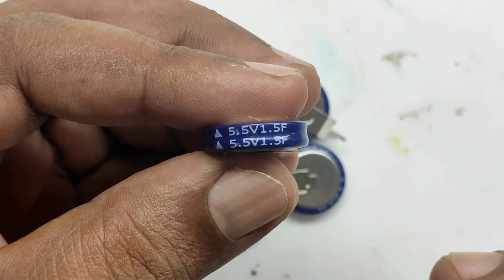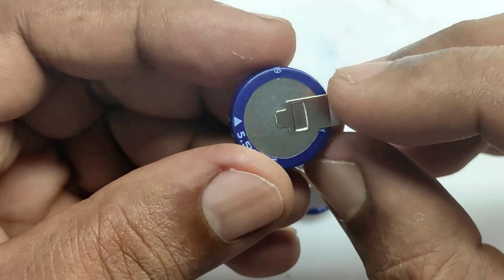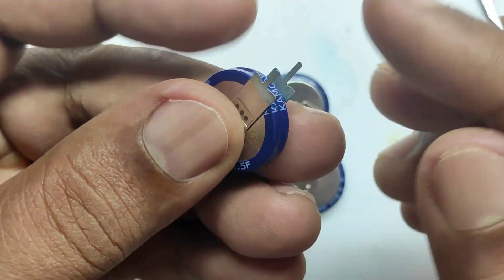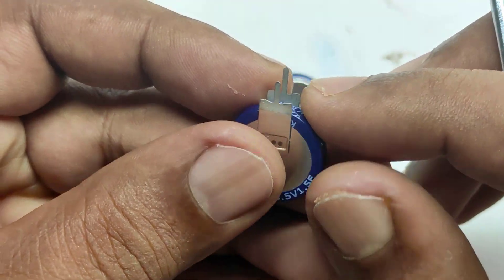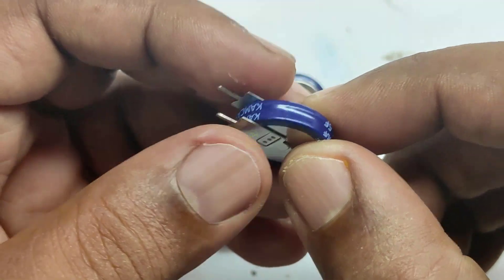Normally we use capacitors with capacitance in microfarads, but here the capacitance is referred as farads, which is very high. Those are the leads of this capacitor. We can insert these leads in a socket or we can solder these leads in a PCB or whatever we like.